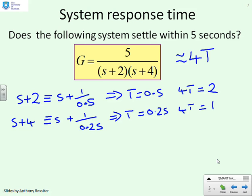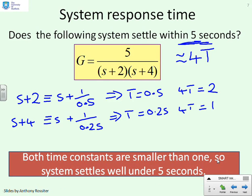So we've got two different modes in this system. Mode 1 has got a time constant of a half. Mode 2 has got a time constant of a quarter. So both of those modes are very fast. And certainly much faster than 5 seconds. And so this system will settle within 5 seconds. And there's the summary. Both time constants are smaller than 1. And so the system settles well under 5 seconds.